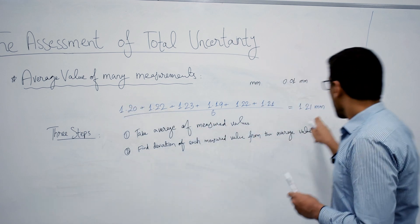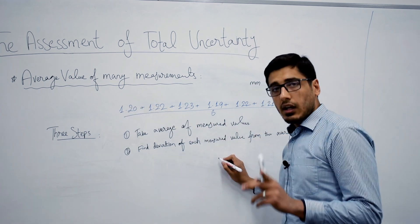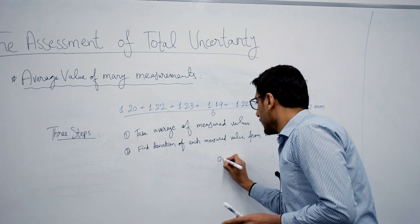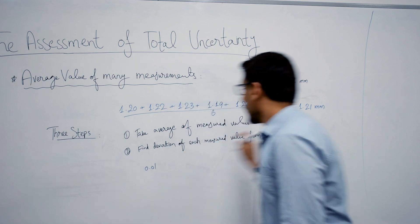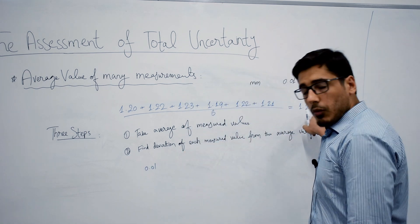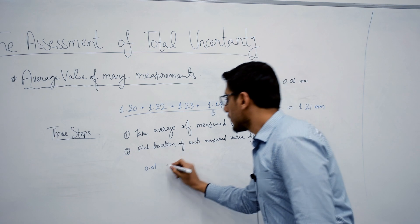First measured value has a deviation of 0.01 mm from the average value. The next one has again 0.01.